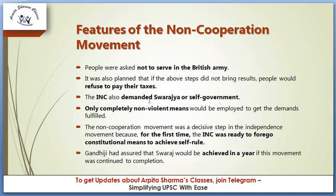The INC demanded Swarajya and self-government. Only completely non-violent means would be employed to get the demands fulfilled. The use of non-violent means was a decisive step in the independence movement because for the first time the INC was ready to forego constitutional means to achieve self-government.